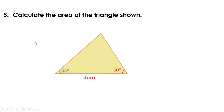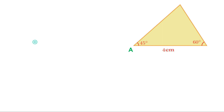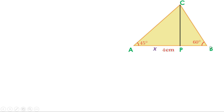Another problem: calculate the area of the triangle shown. Let us give a name for the triangle. Area of a triangle is (1/2) × B × H, where B is a side and H is the height to that side. The side AB is given as 4 centimeters. If we draw the perpendicular from C to AB, meeting AB at P, and find the length of PC, we can find the area of triangle ABC. Suppose AP = X, then PB = 4 − X.